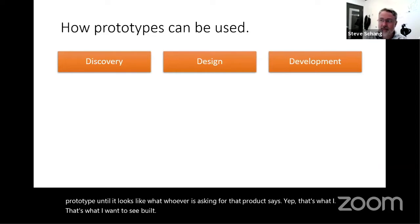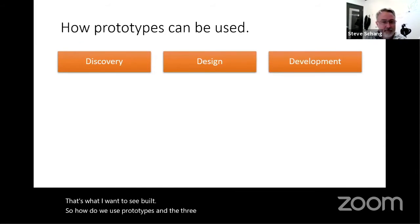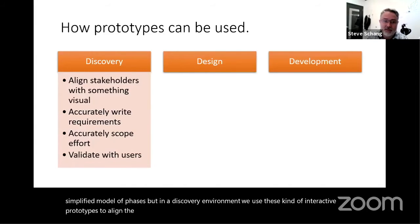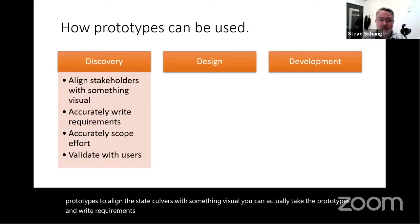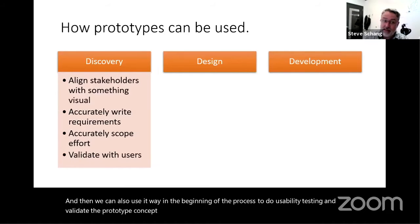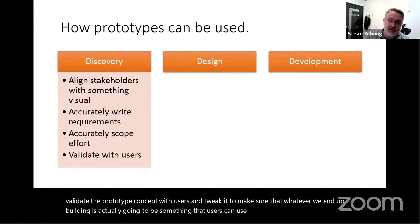How do we use prototypes in the three phases of a project? In a discovery environment, we use interactive prototypes to align stakeholders with something visual. You can actually take the prototypes, write requirements from them, and scope the effort. We can also use it early in the process to do usability testing, validate the prototype concept with users, and tweak it to make sure whatever we end up building is something users can use, want, and that solves a business problem.